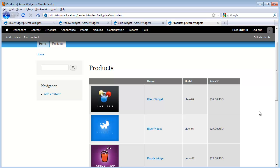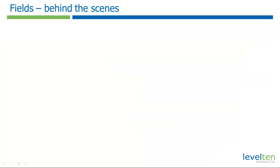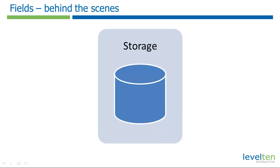If this data was just embedded into the body content, there would be no reliable way to give it special treatment. So let's take a deeper look at what Fields is doing behind the scenes. The first thing that Fields does is gives us a way of storing our data. Much of this is done in your site's database, but it can also store data to files or other resources. When you create a new field, the field system automatically alters your database to support intelligent storage of the data — no DBA required.